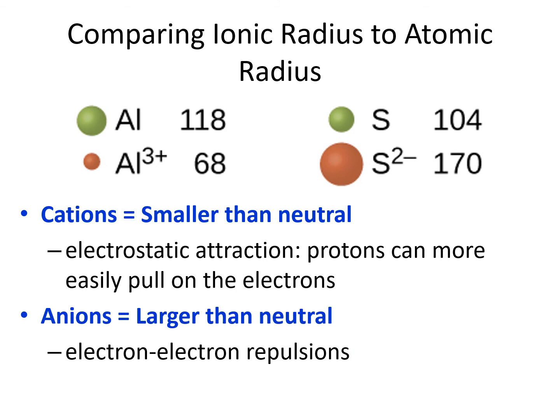We can know what an ion would be like compared to its neutral counterpart. Cations will be smaller than their corresponding neutral atom. For example, the aluminum 3+ ion is smaller than neutral aluminum. This is because when the atom loses electrons, the electrons that are left are going to feel more pull from the protons in the center of the atom — there is an overall positive charge, so the electrons get pulled inward more and the ion is smaller. Anions will be larger than their corresponding neutral atom. For example, the sulfur 2− ion is larger than neutral sulfur. This is because when the atom gains electrons, there will be more electron-electron repulsions, pushing the ion to be larger than its neutral counterpart.